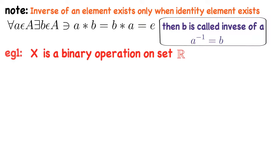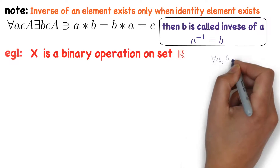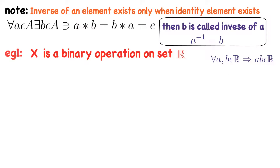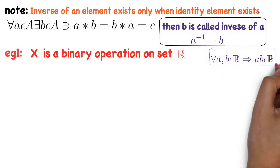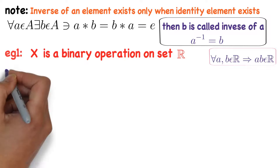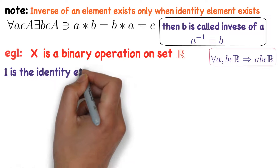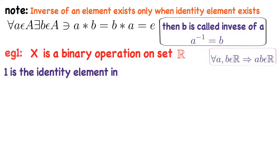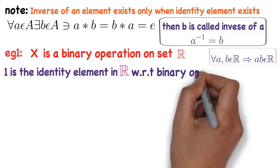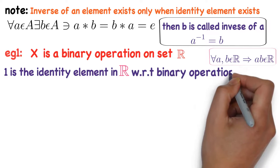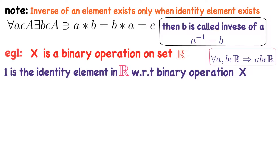Take any two real numbers — the multiplication of two real numbers is again a real number. So yes, multiplication is a binary operation on the set of real numbers. Now, 1 is the identity element in ℝ with respect to multiplication. We check: for any A in ℝ, A into 1 equals 1 into A equals A. So 1 is the identity element.